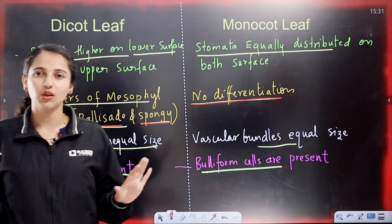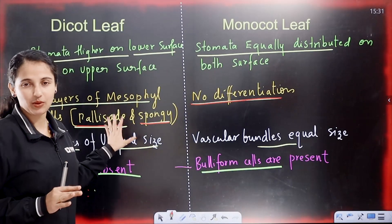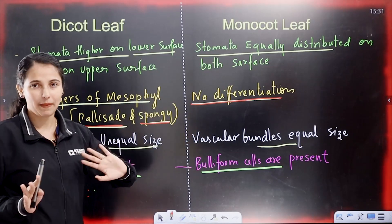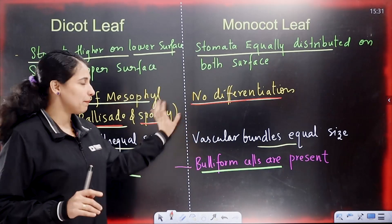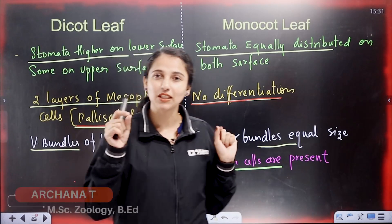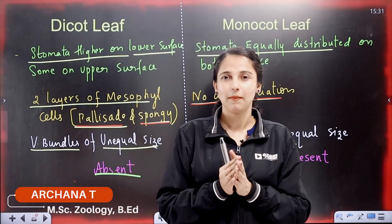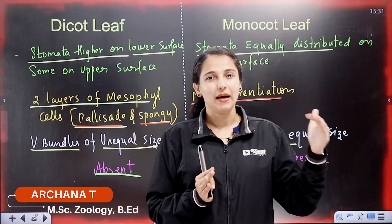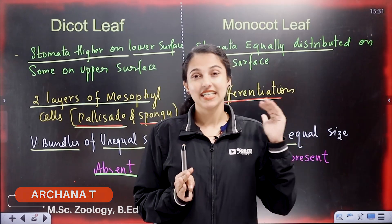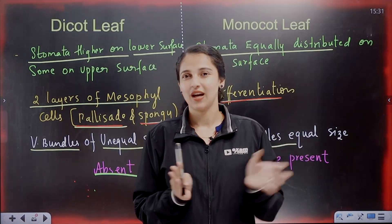So, in summary, we have compared the dicot leaf and monocot leaf. The key differences include mesophyll tissue differentiation into palisade and spongy mesophyll in dicot, while monocot has no such differentiation.